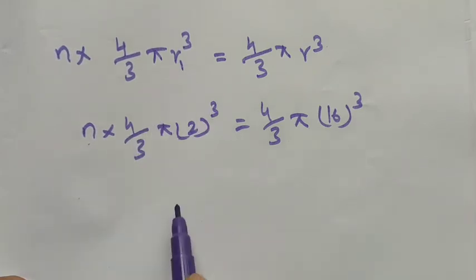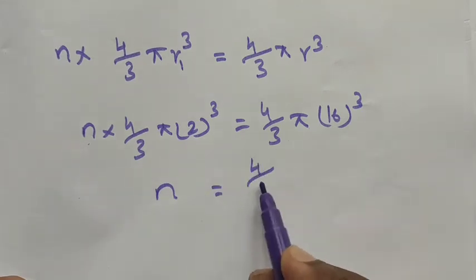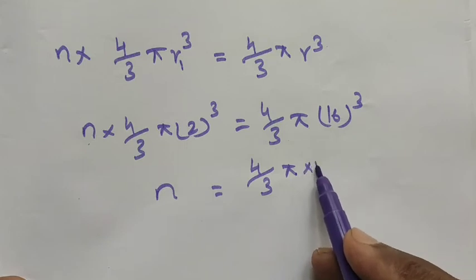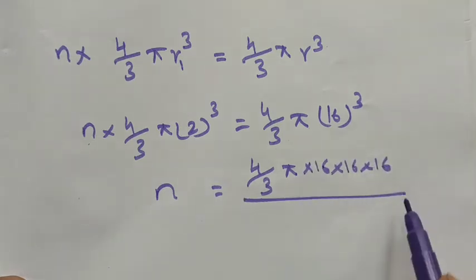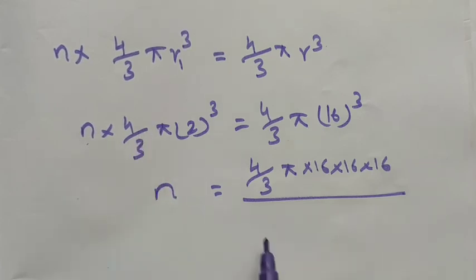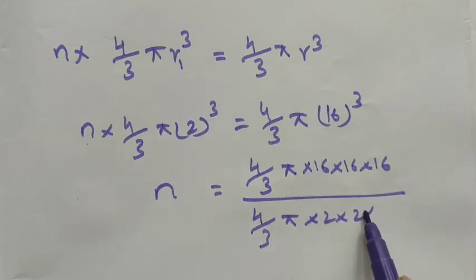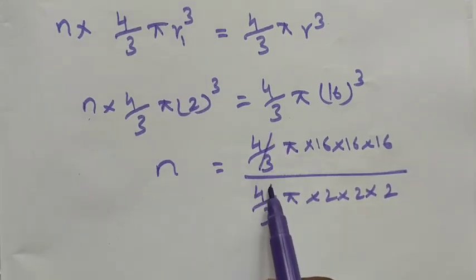Taking the whole term to the other side: n is equal to four by three pi times 16 cubed divided by four by three pi times 2 cubed. The four by three and pi cancel out on both sides, leaving n equal to 16 cubed divided by 2 cubed.